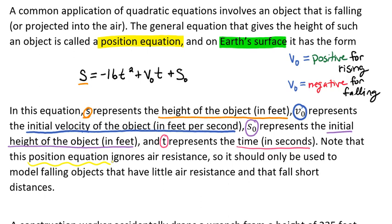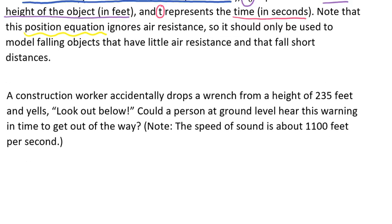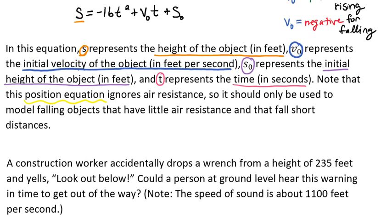Let's go ahead and do an example of how this works. A construction worker accidentally drops a wrench from a height of 235 feet and yells, look out below! Could a person at the ground level hear this warning in time to get out of the way? Note that the speed of sound is about 1100 feet per second.